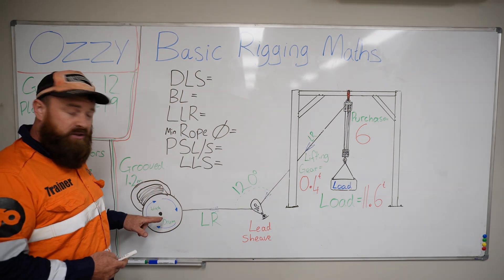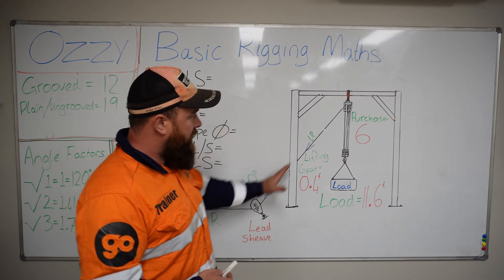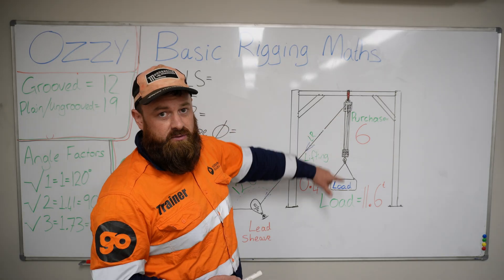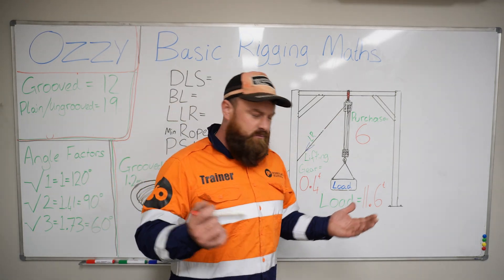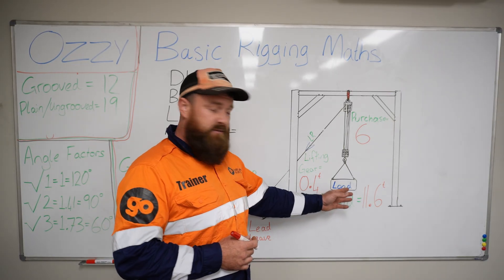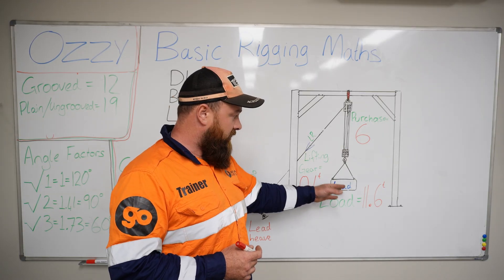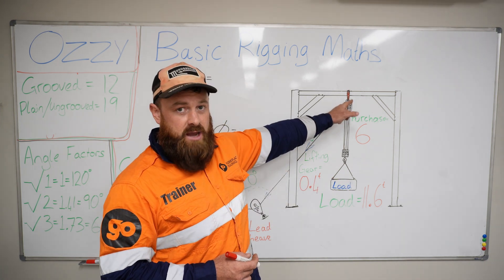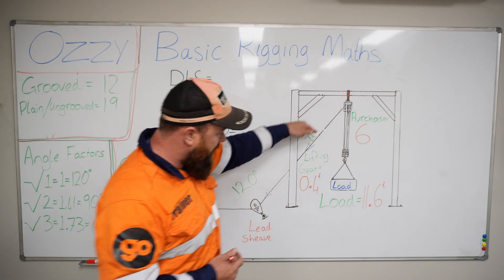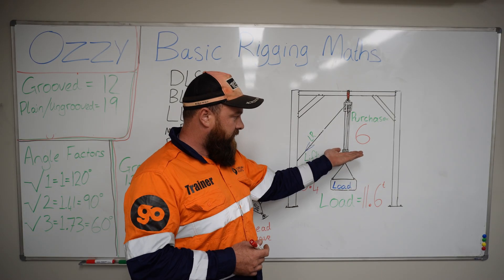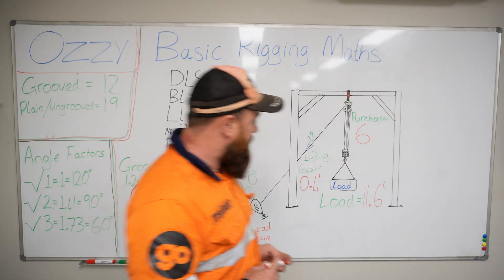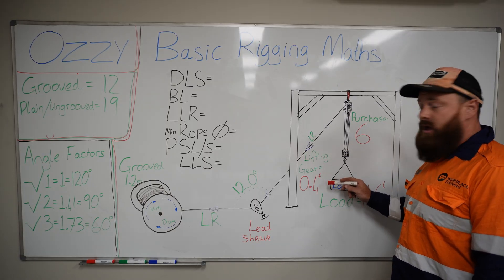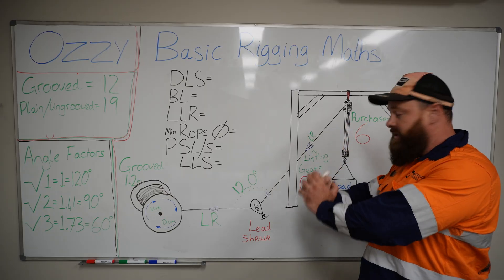The lead rope comes from the winch drum through the lead sheave. It goes up to the purchase support sling and the block hanging off the bottom of that, down through the series of sheaves making a complete revolution of up to six times. This combined load of 12 tonnes is pulling down on the head sling. Now for us to be able to lift this load up we also need to pull down on the lead rope to lift that load off the ground. We need to make sure that this head sling is capable of supporting the total weight of the load, the total weight of the lifting gear, as well as the weight that we will be pulling down on the lead rope.